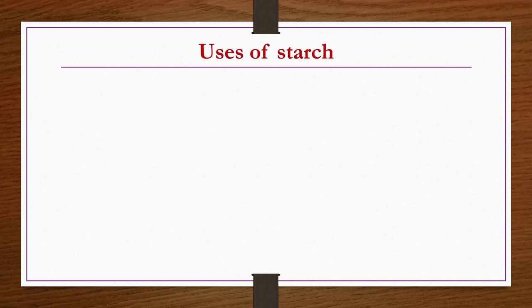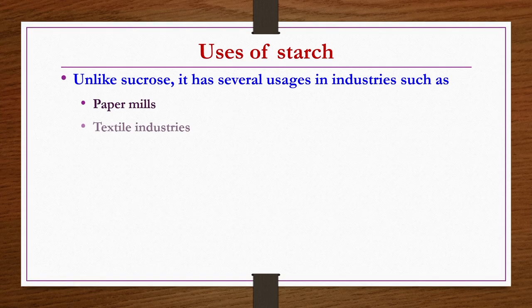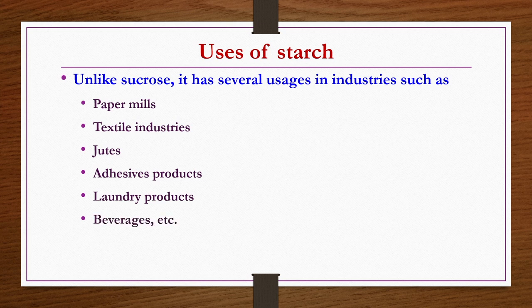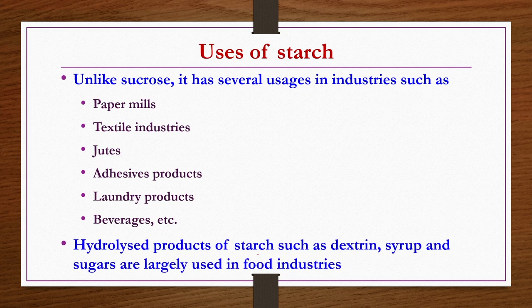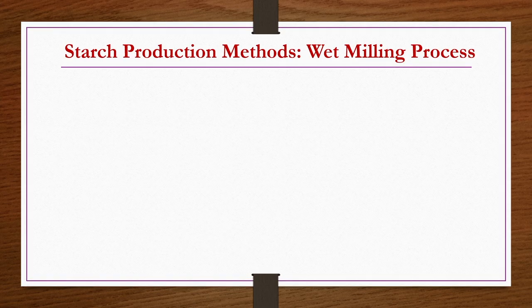Uses of starch: unlike sucrose or sugar, starch has several industrial applications. These include paper mills, textile industries, jute making, adhesive production, laundry products preparation, and beverages, among many other applications. Hydrolyzed products of starch such as dextrin, syrup, and sugars are largely used in food industries. Now we discuss starch production by wet milling process.